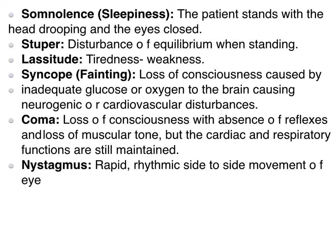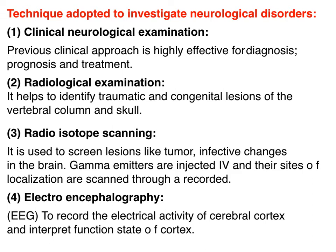Nystagmus is rapid rhythmic side-to-side movement of the eyeball. There are technical methods for investigating neurological disorders. Number one: clinical neurological examination — the clinical approach is highly effective for diagnosis, prognosis, and treatment. Number two: radiological examination. Number three: radioisotope scanning using special techniques. Number four: electroencephalography (EEG), used to record the electrical activity of the cerebral cortex.